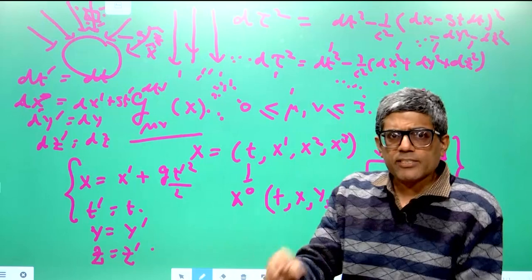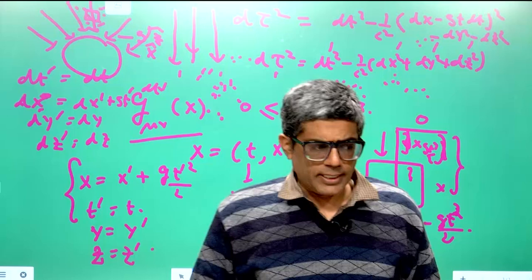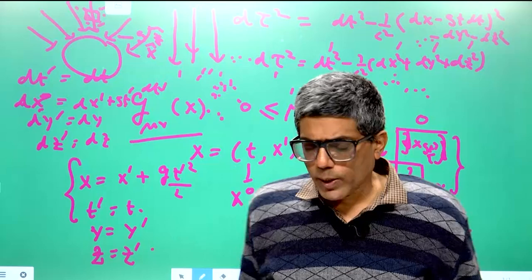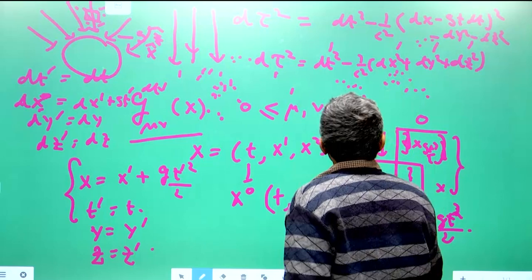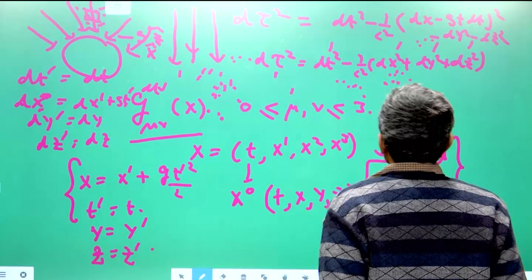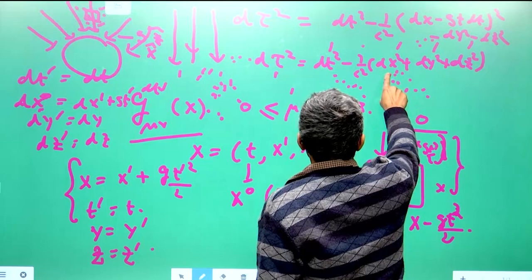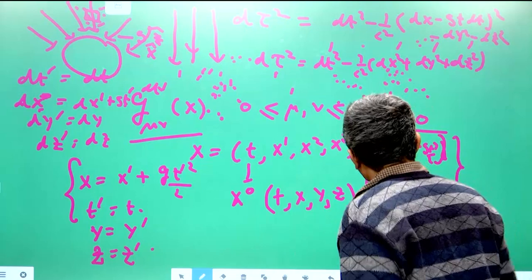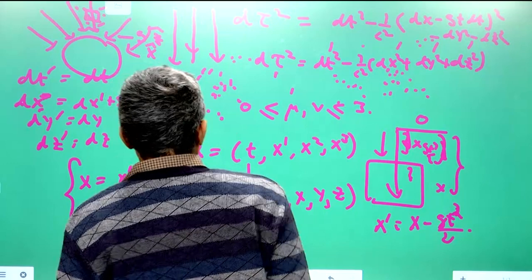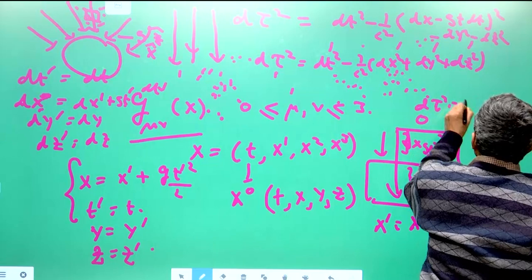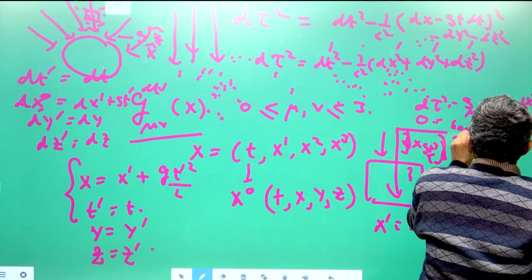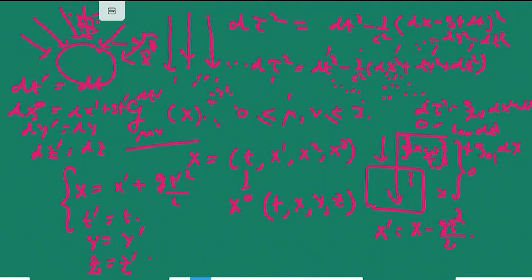When you can globally cancel the metric by a diffeomorphism, the gravitational field is just a consequence of a wrong choice of coordinates. The non-flat structure of the metric appears only because of an improper choice of coordinate system. Einstein said that when gravity is present, spacetime gets warped, producing non-diagonal coefficients in the metric tensor and causing the metric components to become functions of t, x, y, and z.